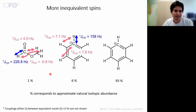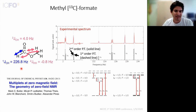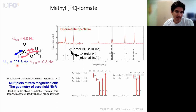The zero-field spectrum of methyl formate: there's an experimental spectrum at zero-field in red and simulated spectra in black. The dashed lines take the one-bond carbon-hydrogen coupling as a reference system — which if you recall has a single peak at the one-bond carbon-hydrogen coupling — and the more distant couplings are applied as perturbations in pink. There's a very good match even at first order, and even better at second order.